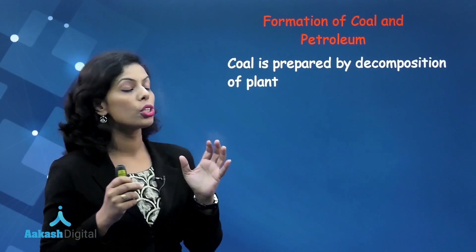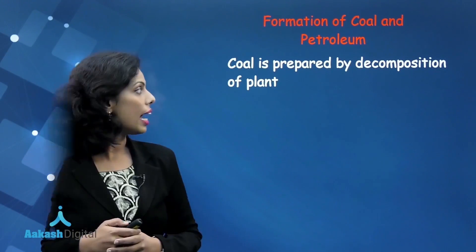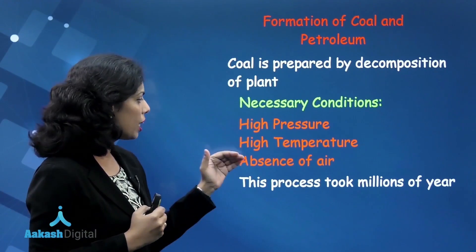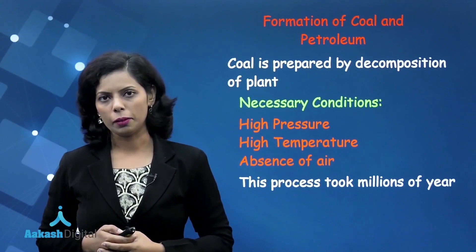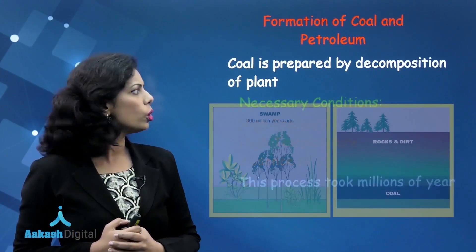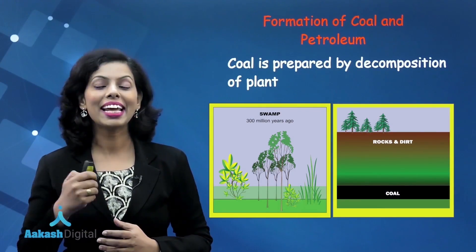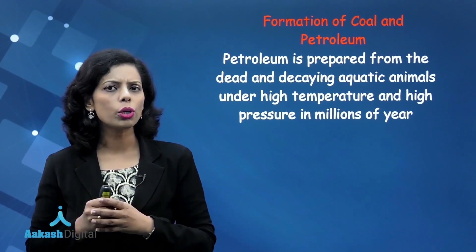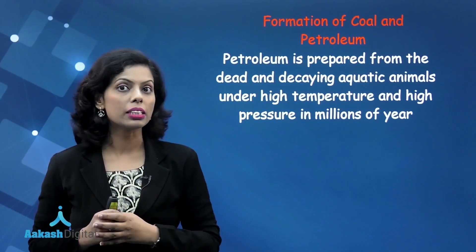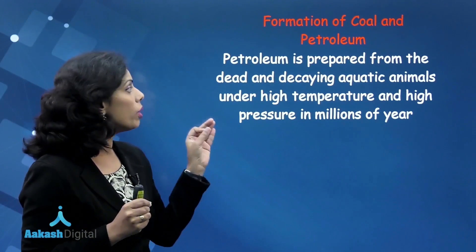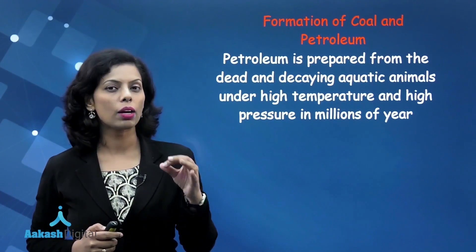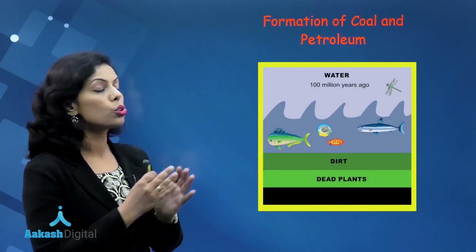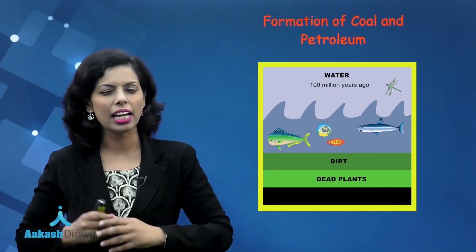We discussed the formation of coal and petroleum, covering the necessary conditions: high pressure, high temperature, absence of air, and millions of years. The process was shown with diagrammatic representation. Coal was prepared from dead and decaying plants, while petroleum was prepared from small aquatic animals, also under high pressure and high temperature.